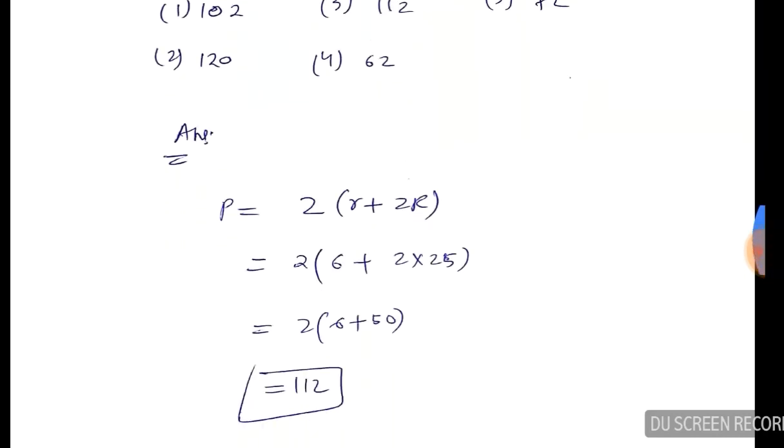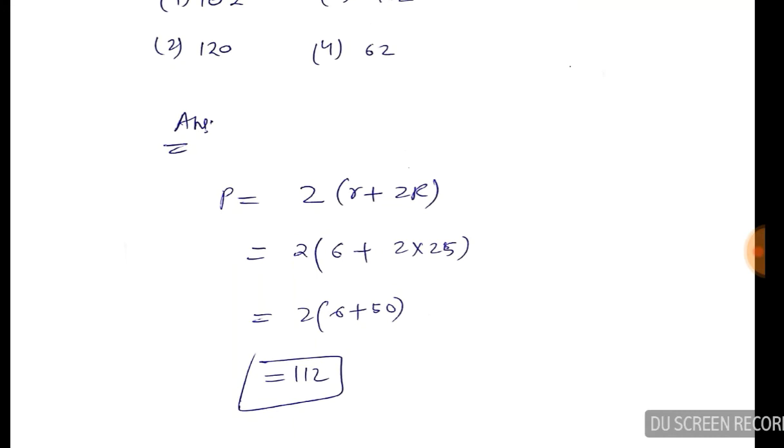I am telling the direct formula. The formula is 2 into small r plus 2 into capital R. This is a direct formula. The value of r is 6 and capital R is 25. The answer is 112.